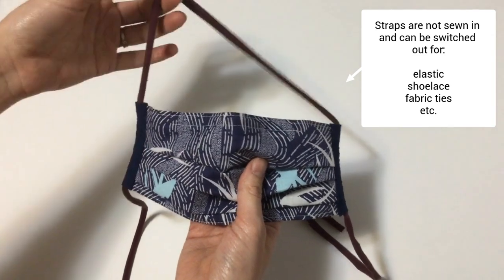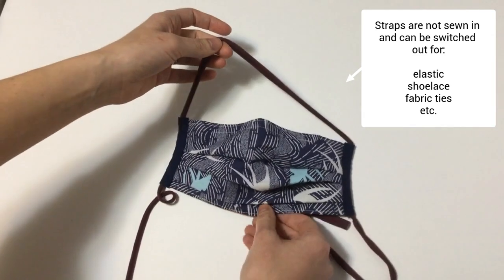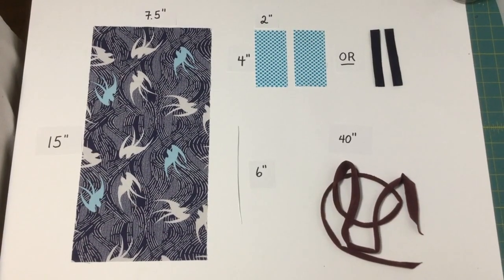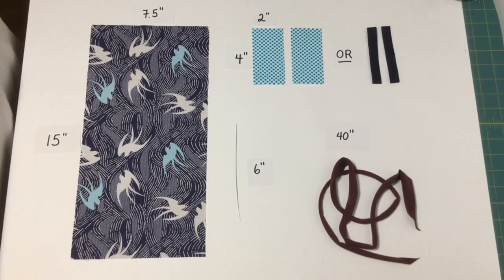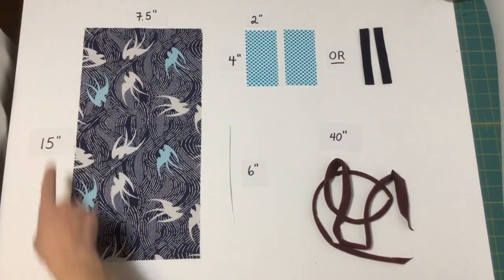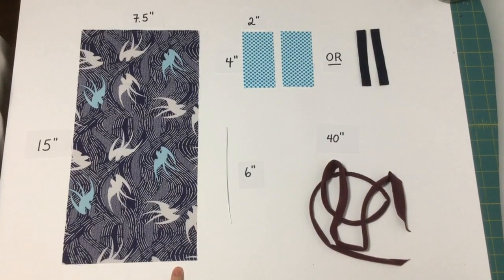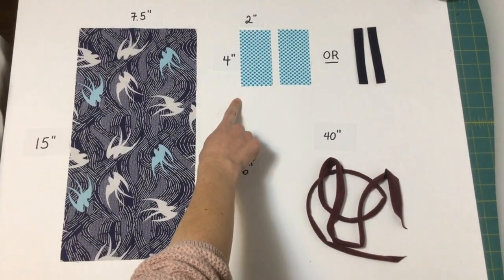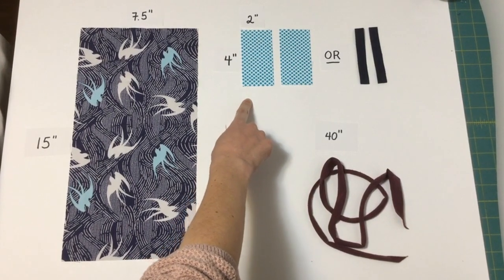This is what you'll need to make this mask: one piece of high quality quilting cotton 15 inches by 7.5 inches, two pieces of quilting cotton cut to four inches by two inches.